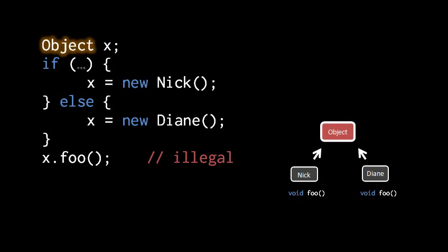Even if we write our code in such a way that x is only going to possibly be holding a Nick or a Diane object and both of those have a foo method, well the compiler doesn't even try to figure that out, so it doesn't presume to know whether that's true or not. So as far as it's concerned, foo is not a valid method to invoke via the reference x.